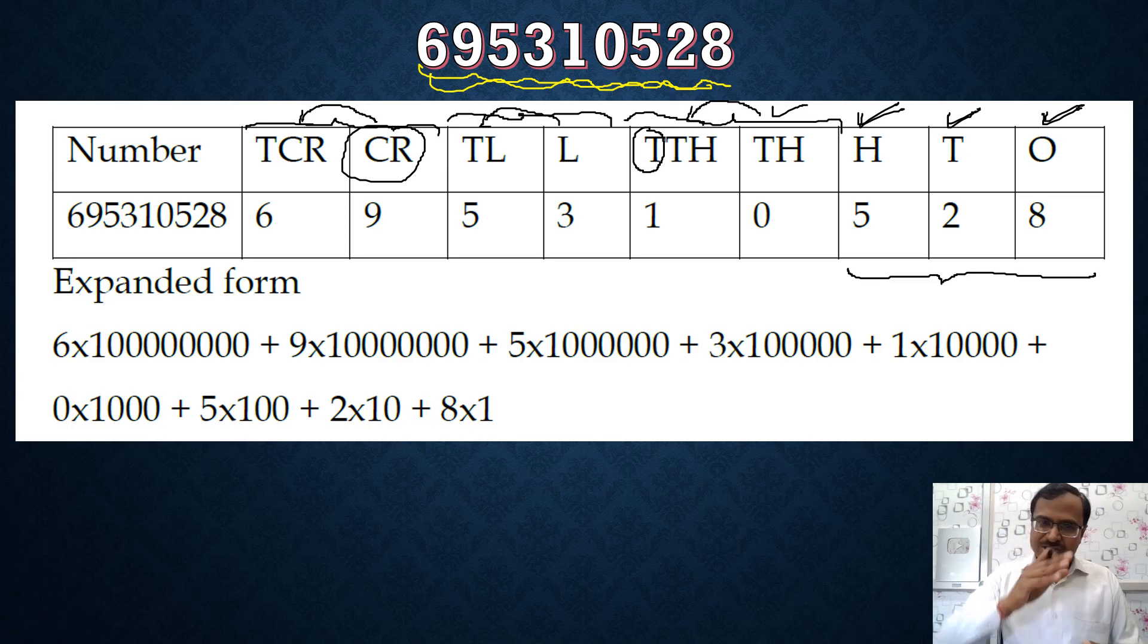So this is the Indian system of numeration which has been described in these placement boxes. O, T, H from the right hand side: ones, tens, and hundreds. And after that learn in pairs: thousand, ten thousand, lakh, ten lakh, crore, ten crore. I hope that is not a problem for you now.